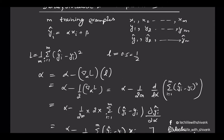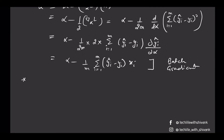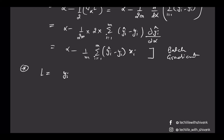For stochastic gradient descent, we update the parameters such that we do not consider all examples in our loss function — the loss function consists of only one example. Let's say the example is the i-th example, and the loss is simply (y_i-hat minus y_i) squared. The stochastic gradient update for alpha equals alpha minus the derivative with respect to alpha of (y_i-hat minus y_i) squared, times the learning rate 1/2.